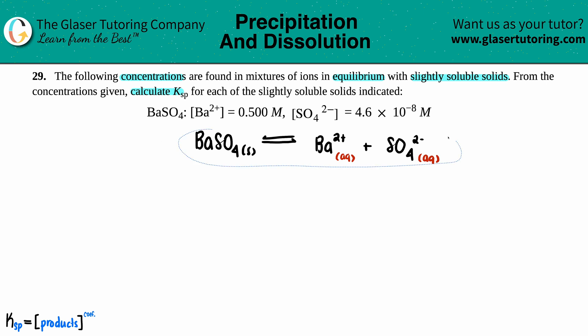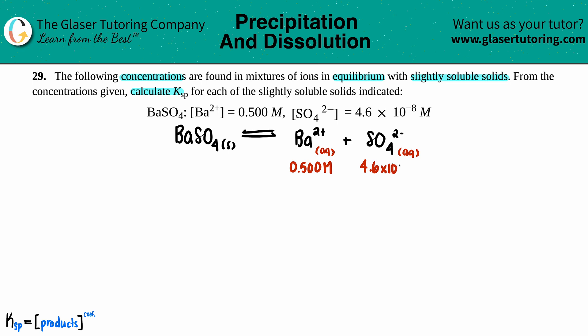Love it. Now I'm just going to write down the information that they gave us. The barium 2+ concentration is 0.500 molarity, and then the sulfate ion is 4.6 times 10 to the negative 8 molarity.